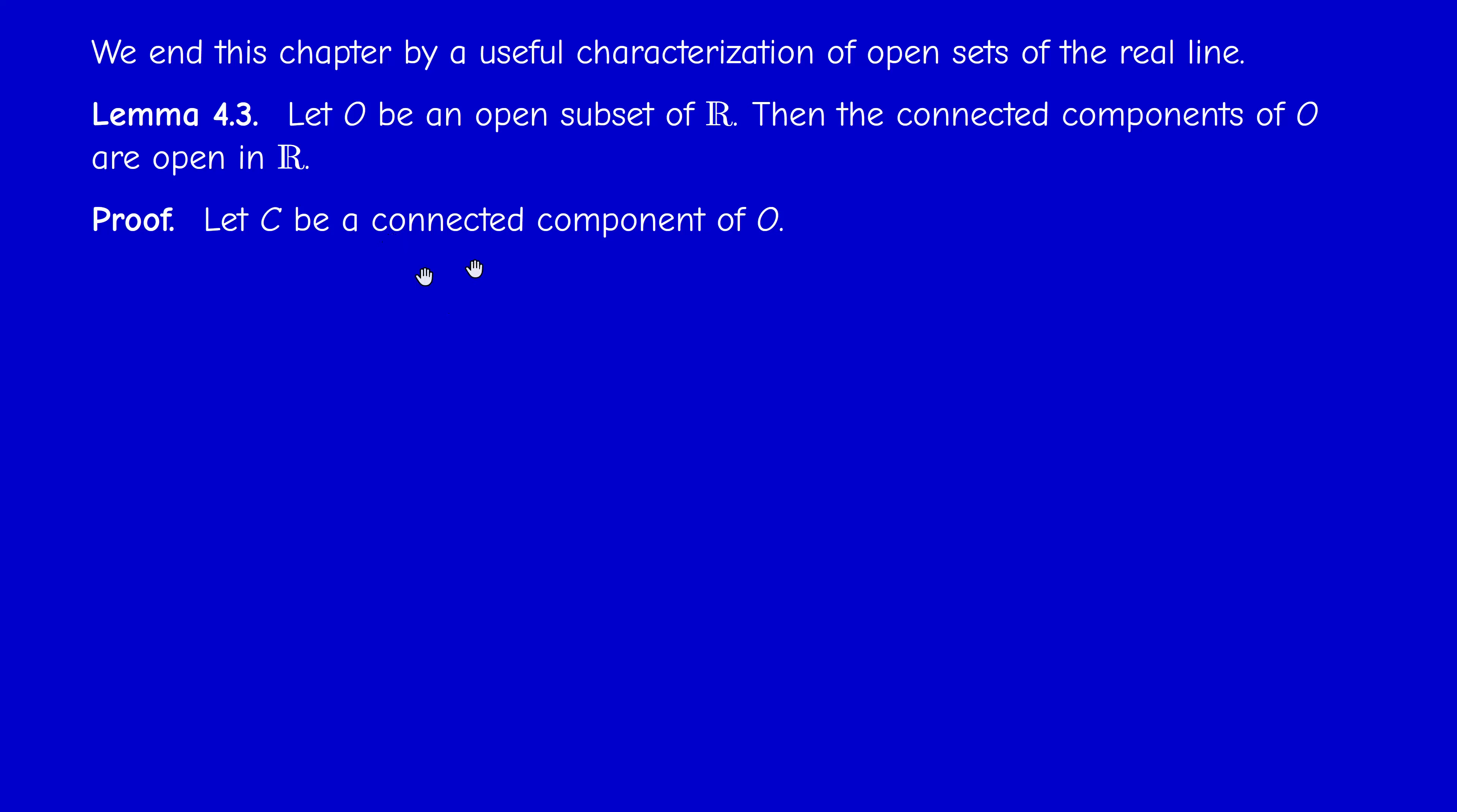So let capital C denote a connected component of this open set O, and consider an element x in C. Now since O is open, it is a neighborhood of x. Therefore, by definition there exists a ball, which is an interval actually, of the form x minus ε, x plus ε.